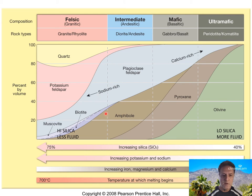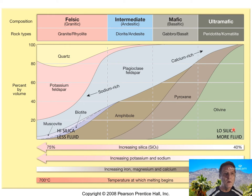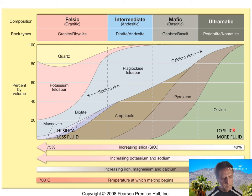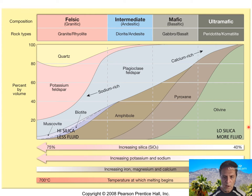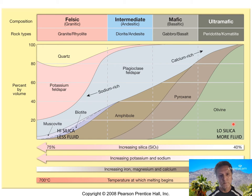Looking at the chart again: to the left, high silica means less fluid; low silica means more fluid. If you have more silica in a magma or lava, you have more silicon tetrahedra (SiO4), which tend to lock up, cluster, and chain together, thickening the mix and making the magma less fluid. On the low-silica end there are fewer tetrahedra to cause a 'traffic jam,' so the magma is more fluid.